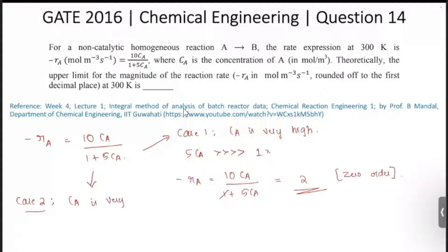In that case, 5 C_A will be very very less than 1, and the reaction rate will be 10 C_A by 1 plus 5 C_A. And since C_A is very very very small, we can neglect this 5 C_A term, and this reaction rate will be 10 C_A.